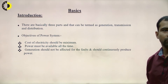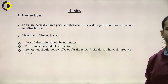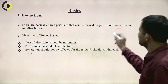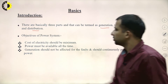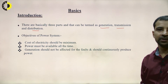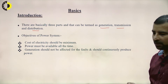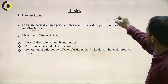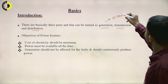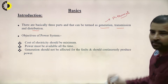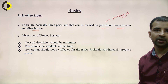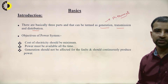The power system consists of three parts: generation, transmission, and distribution. The generation part is where electricity is generated. For example, we use thermal power plants or NTPC hydroelectric power plants at the generation end.